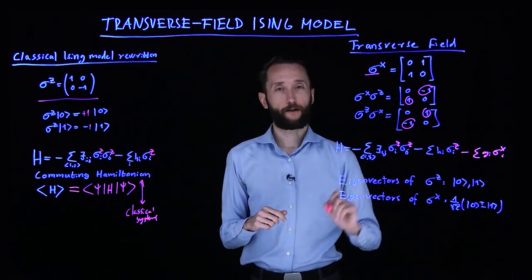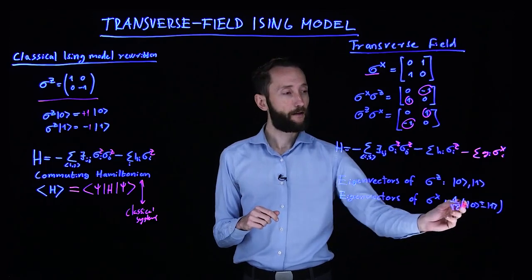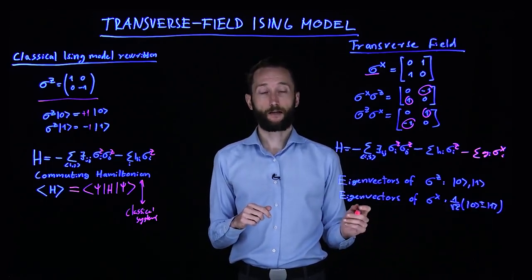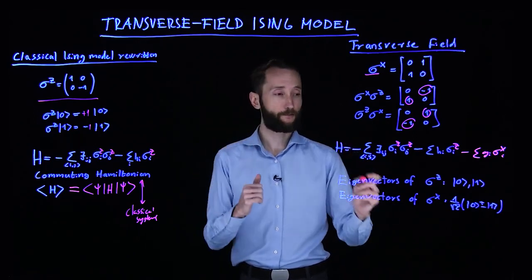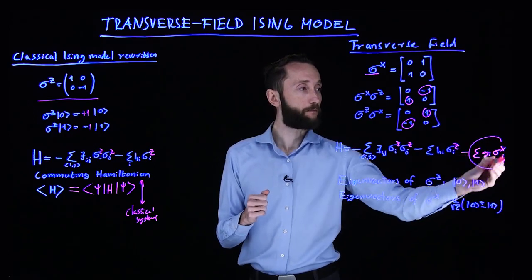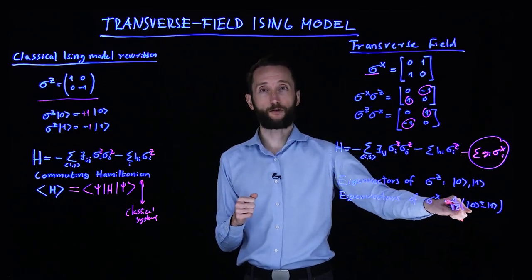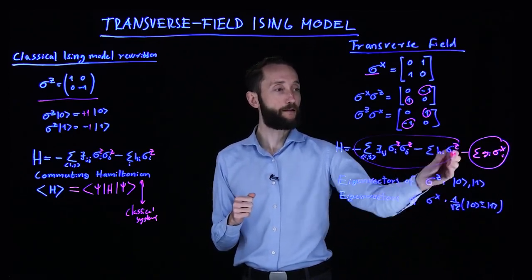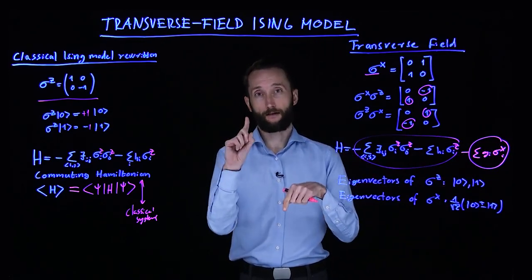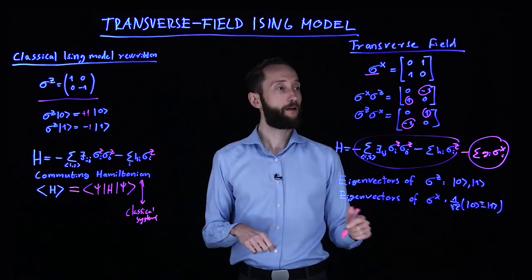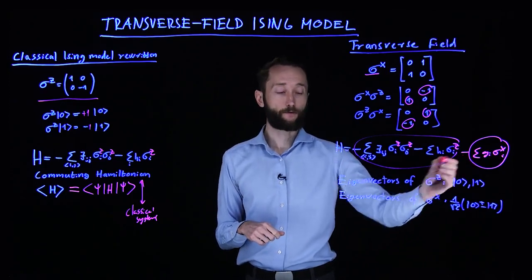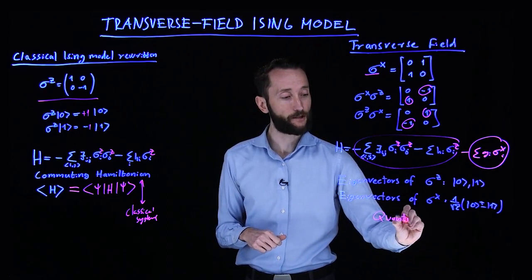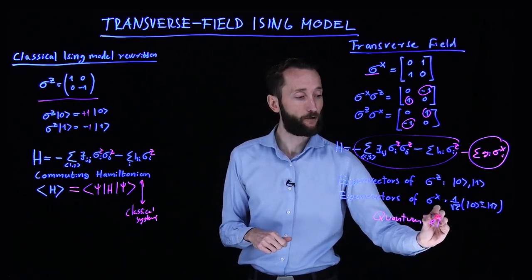If you look at the eigenvectors of sigma x, it's one of the two states of the equal superposition. In other words, when you try to minimize the energy of the system, this term tries to push it into a superposition, whereas the sigma z interactions are trying to be deterministically either zero or one. This is where you get this quantum effect by pushing it towards a superposition and having this non-commuting term.